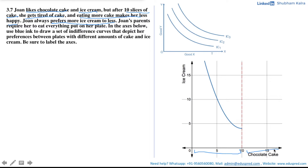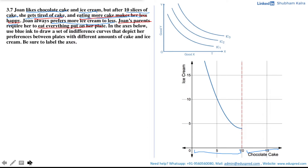After 10 slices of chocolate cake, Joan's behavior changes — she gets tired of cake and eating more makes her less happy. Every additional slice gives her a lower level of satisfaction. Since her parents require her to eat everything on her plate, she must consume those cakes even though they reduce her satisfaction. After 10 slices, chocolate cake effectively becomes a 'bad' commodity.